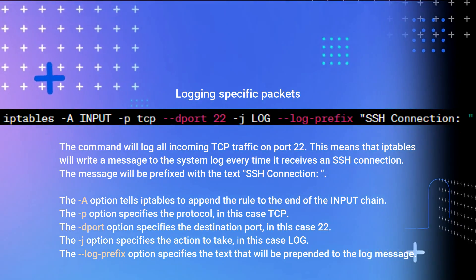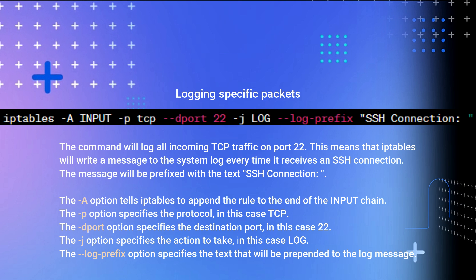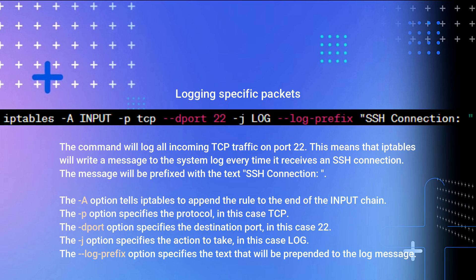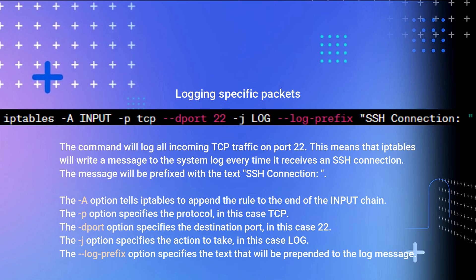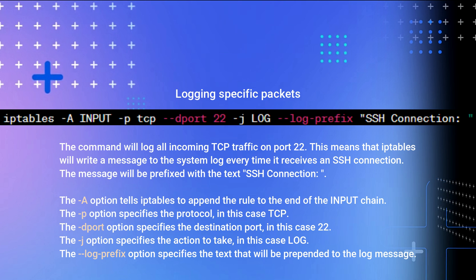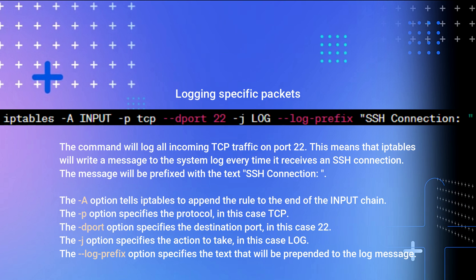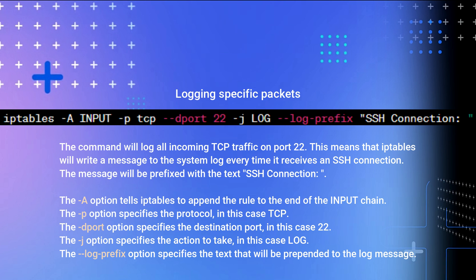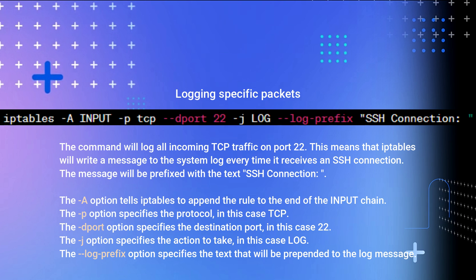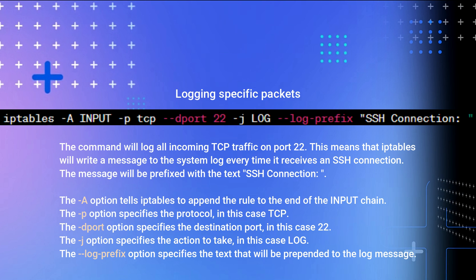Logging Specific Packets: this command logs all incoming TCP traffic on port 22, meaning IP Tables will write a message to the system log every time it receives an SSH connection. The message will be prefixed with the text 'SSH Connection'. The -A option appends to the input chain, -p specifies TCP, --dport specifies port 22, -j LOG specifies the log action, and --log-prefix specifies the text prepended to the log message.